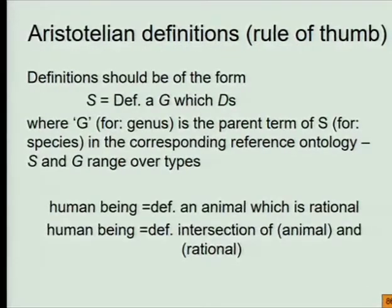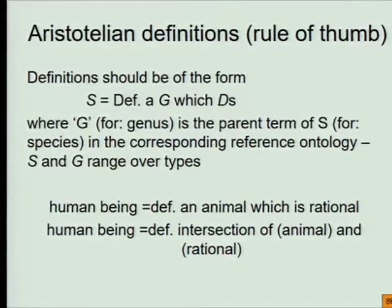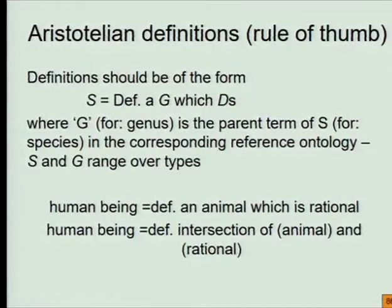The second rule — which is a rule of thumb in the sense that you shouldn't think you can use it everywhere, but you should try and use it everywhere aggressively — is the idea of Aristotelian definitions. To formulate an Aristotelian definition, you find the parent term in your ontology and then you try and find the specific difference: what makes instances of the term you're trying to define differ from all the other instances of the parent term. What makes human beings differ from all the other animals is that human beings are rational. I'm not saying this is necessarily a good definition — I'm saying it's an illustration of this principle.